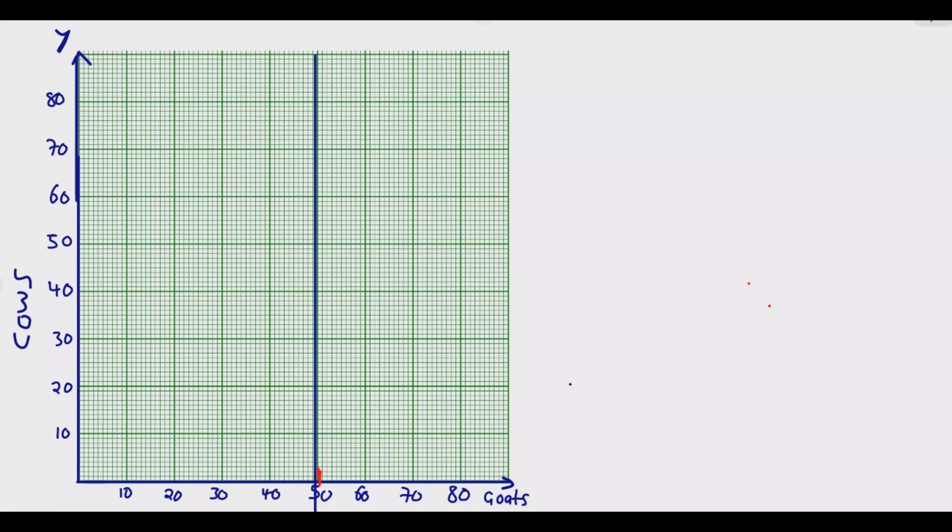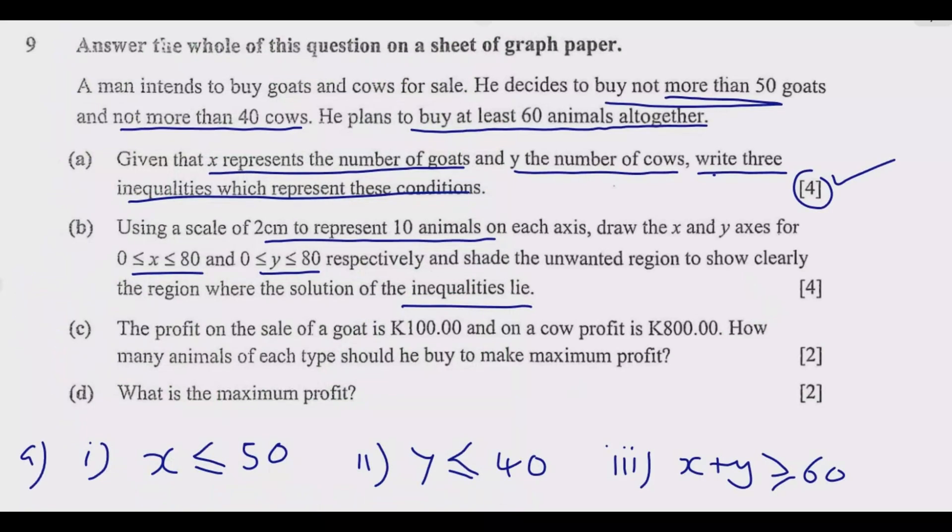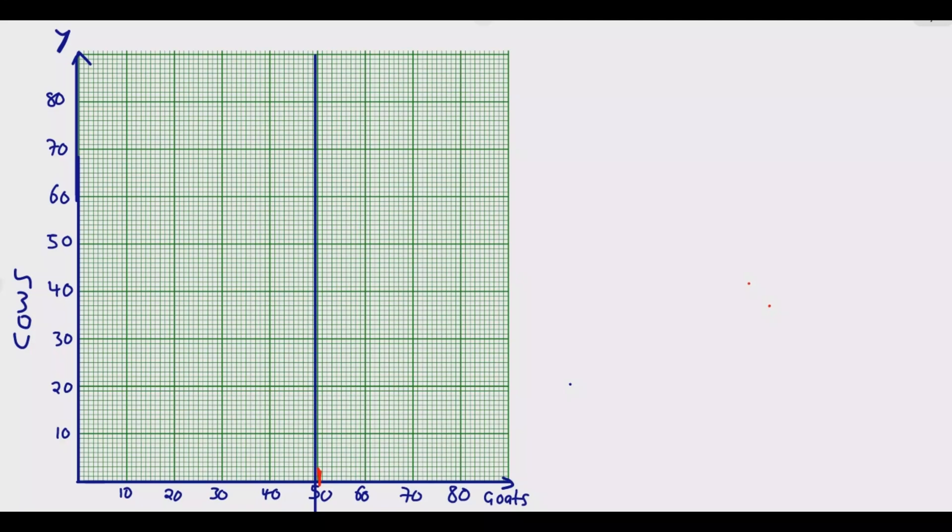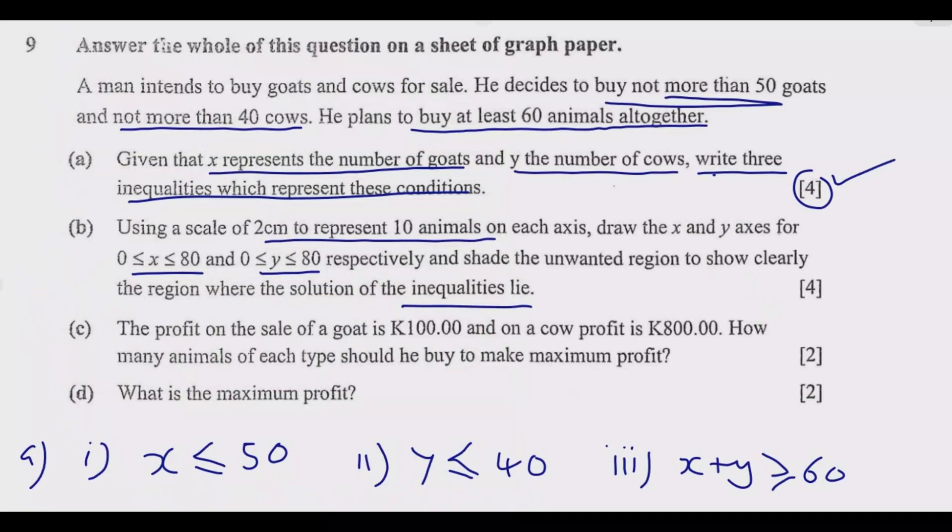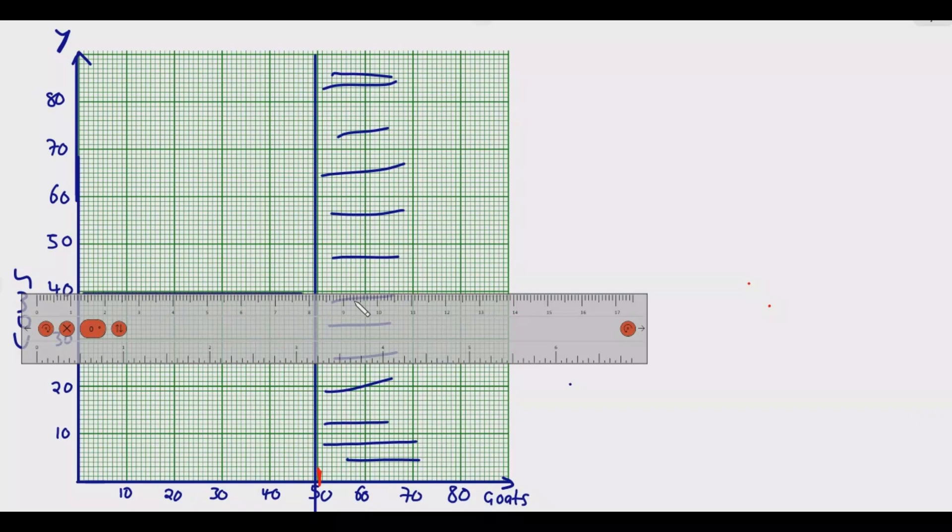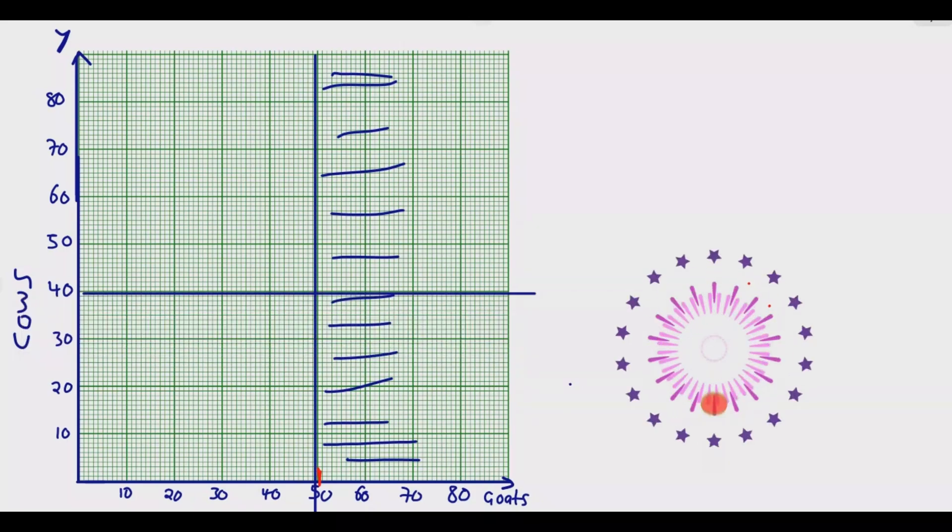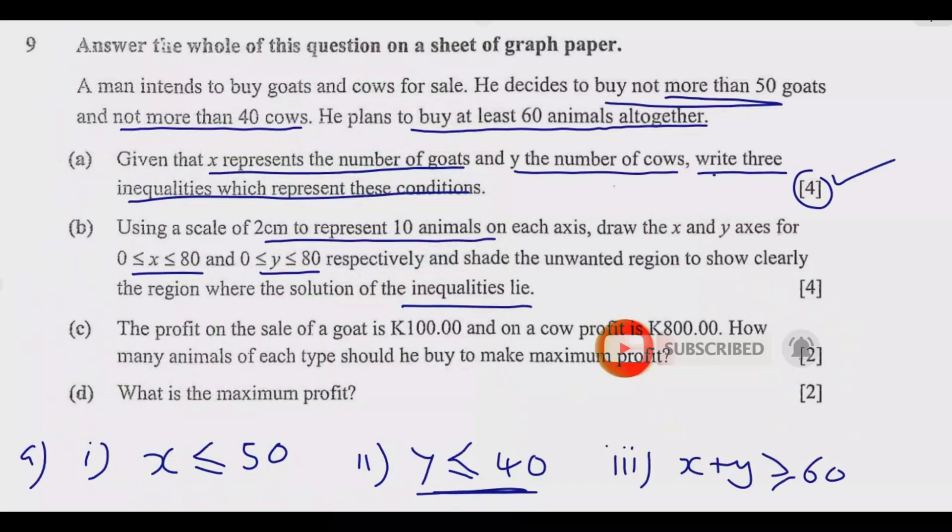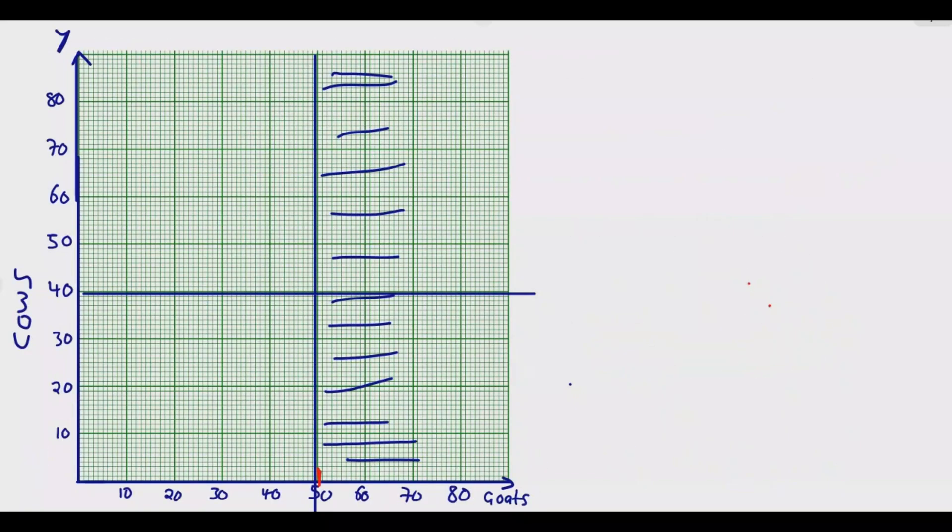Once you do that line, then we can shade. Remember the condition is x is less or equal to 50. So we need the values below 50. So anything above 50 is unwanted. So you come and shade this region as an unwanted region. Then we go to the next one. The next one is y is less or equal to 40. Again, we draw a line like that. The unwanted region in this case, because we are saying y should be less or equal to 40, is above. Because what you want is below. So the unwanted region is what is above. So we shade this one like this.